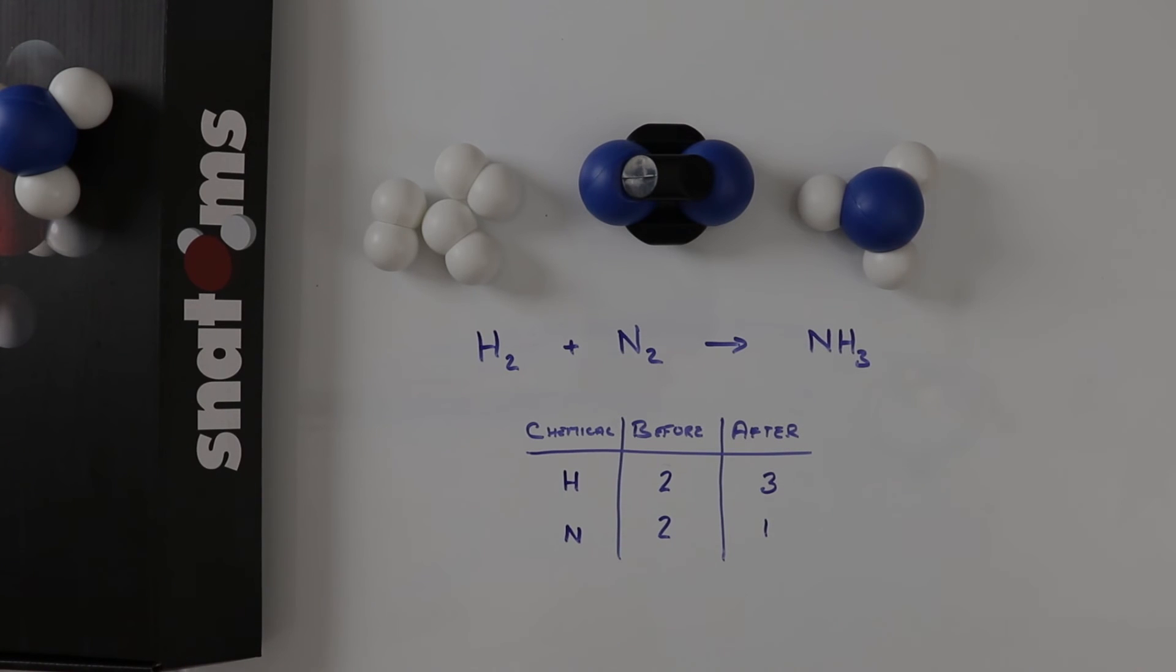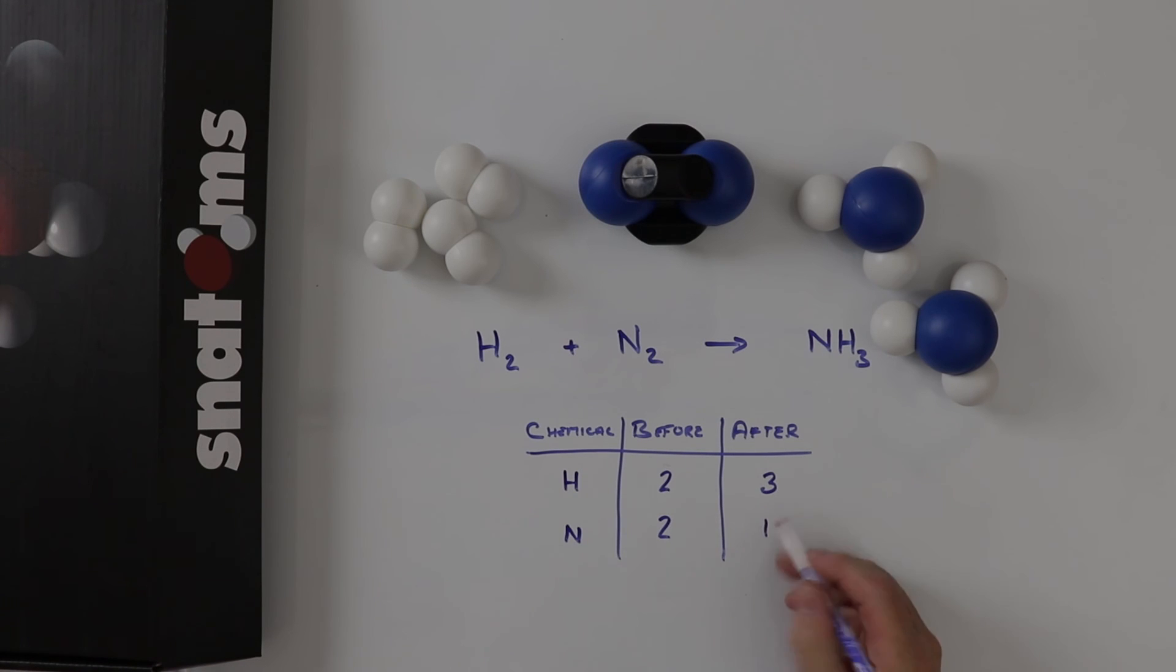Well, if we've got two nitrogens at the start, we have to have two nitrogens at the end. So let's cross this out and replace this with a two. If I've got two nitrogens, then if I put a two here, we're going to have two times three, which is six hydrogens after.